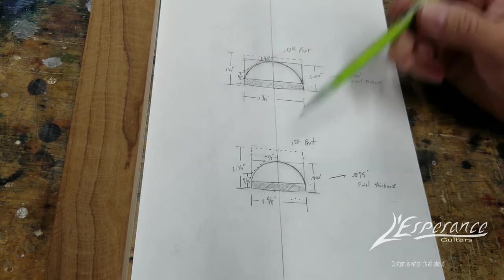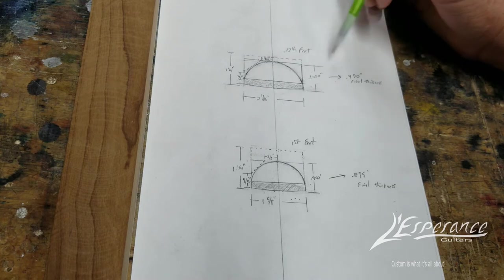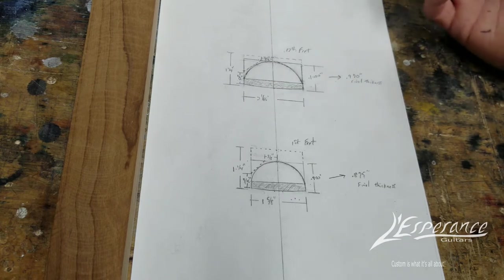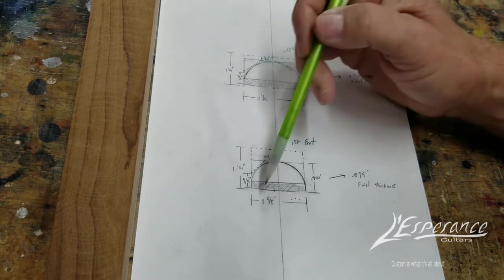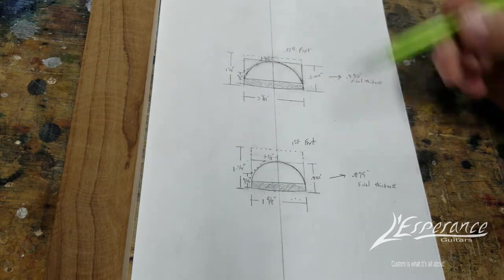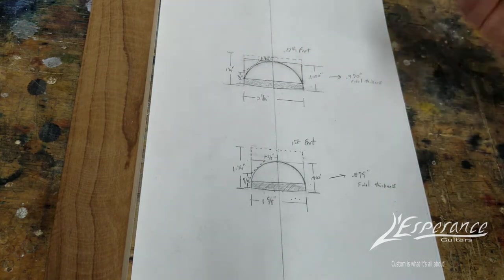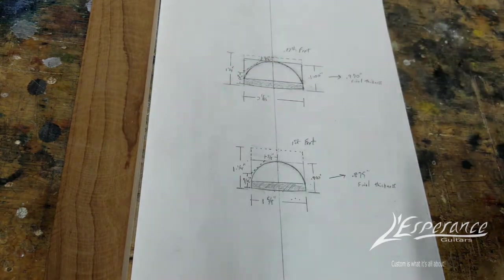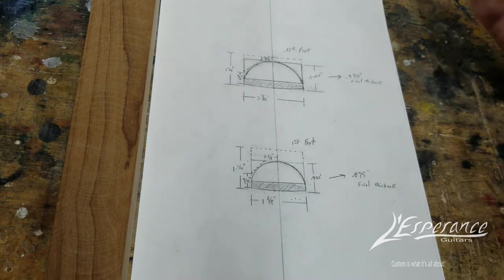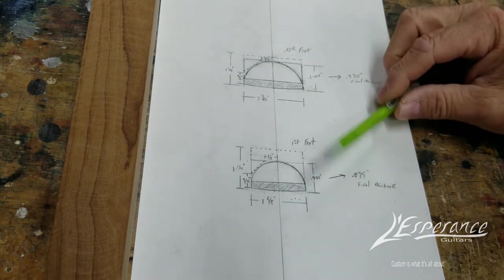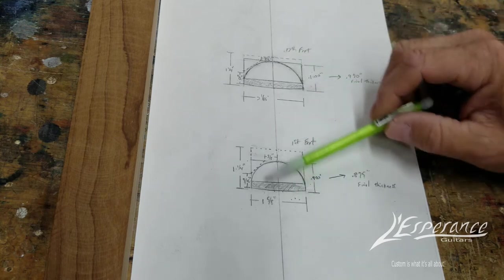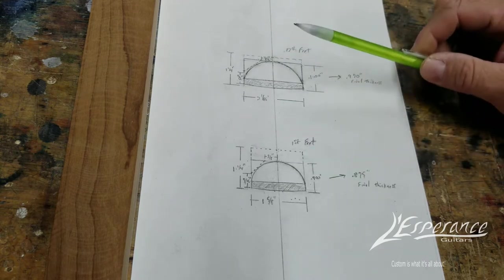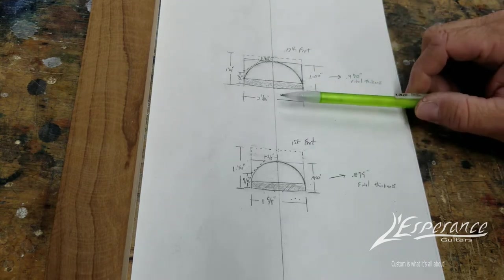My final dimensions, the thickness of this neck is going to be .970 thousandths at the 12th fret, and .875 thousandths at the first fret. Those are the dimensions - that's the thickness the customer wants. Customer also wants a C shape. I came up with this method years ago as a way of getting it in my head how I was going to carve this down without going too far and ruining the neck.